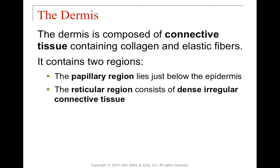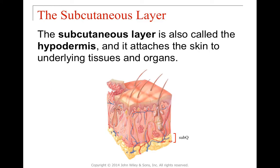Underneath the epidermis is the dermis, which is mainly connective tissue — generally collagen and elastic fiber. It has two regions: the papillary region, which lies right underneath the epidermis at the dermal papillae, and the reticular region, which is mainly dense irregular connective tissue with many reticular fibers. Beneath the dermis is the subcutaneous or sub-Q layer, also called the hypodermis, which attaches the skin to the underlying tissues and organs, acting as a connecting layer.